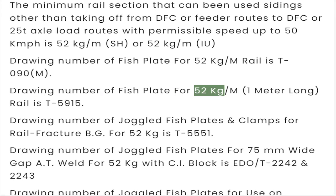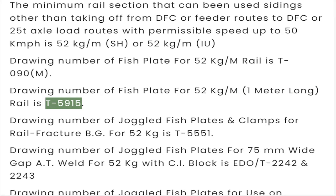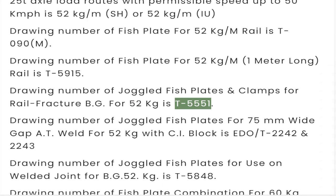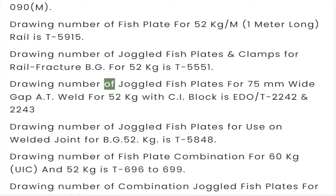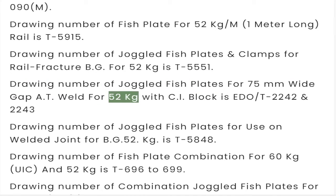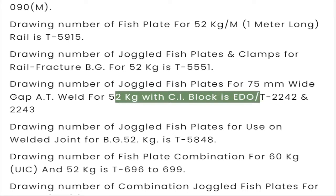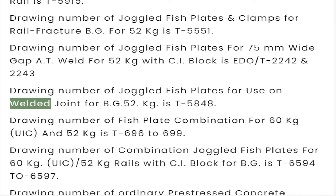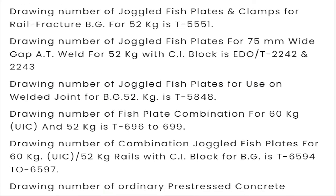Drawing number of fish plate for 52 kg 1-meter-long rail is T5915. Drawing number of joggled fish plates and clamps for rail fracture BG for 52 kg is T5551. Drawing number of joggled fish plates for 75 mm wide gap at thermit weld for 52 kg with CI block is AT2242 and 2243. Drawing number of joggled fish plates for use on welded joint for BG 52 kg is T5848.